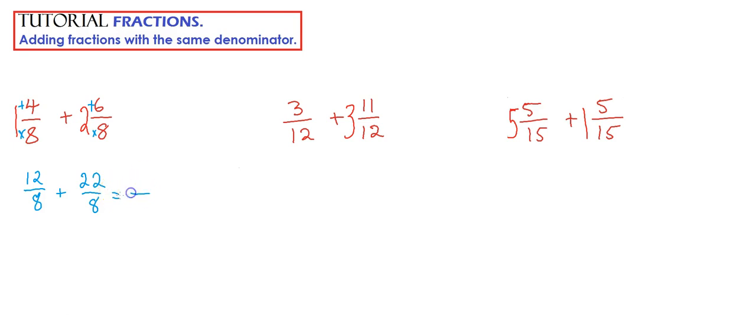And now, simple process. We're dealing with eighths, so the answer is going to be an eighth. We now have to have 12 plus 22. Well, that's 34. So that is the correct answer, but it's an improper fraction.